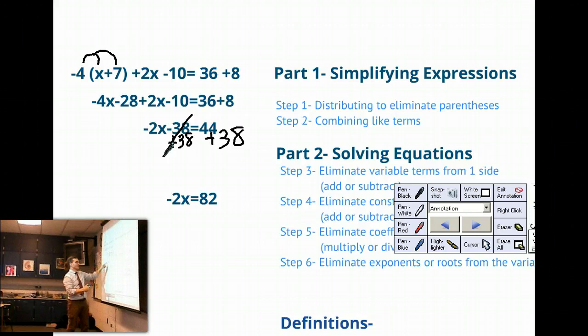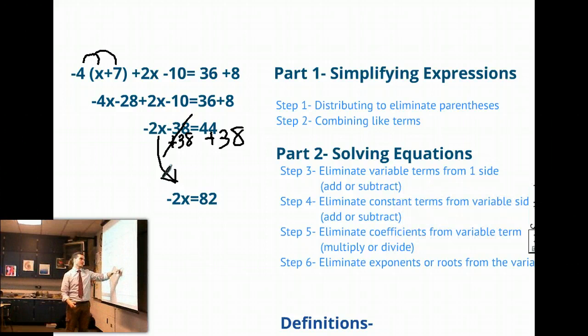All right, and then 44 plus 38 is 82. So that allowed us to eliminate our constant terms from the variable side using addition or subtraction typically. The next piece, we need to eliminate coefficient terms from the variable side. So our coefficient here is negative 2. The negative 2 is being multiplied by x. So the opposite of multiplication, again, we're going to use that inverse operation. The opposite of multiplication will be division. So I want to get rid of that negative 2 using division.